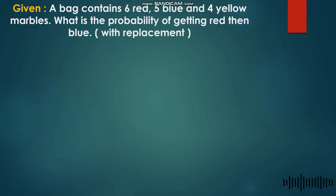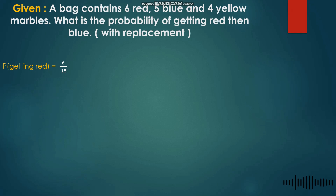In given number 19, we find the probability of getting red then blue but this time with replacement. First, the probability of getting red is 6 over 15 — 6 red marbles in the numerator, and 15 total marbles in the denominator.